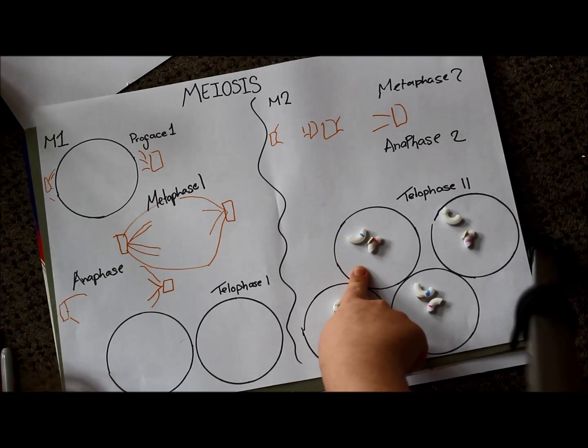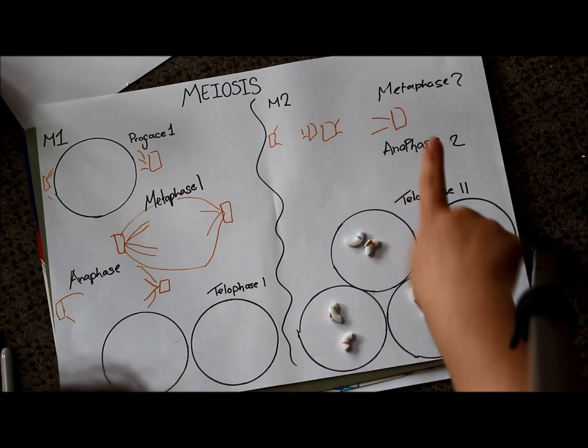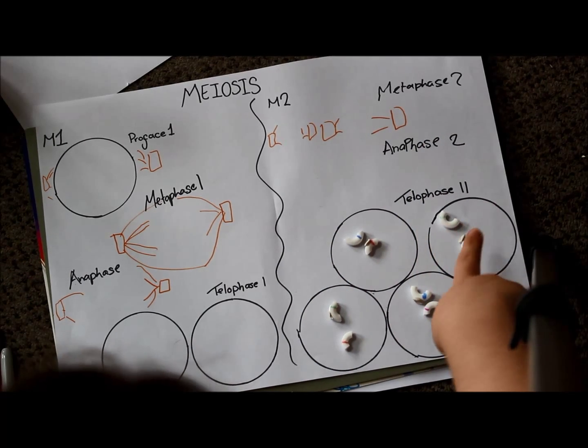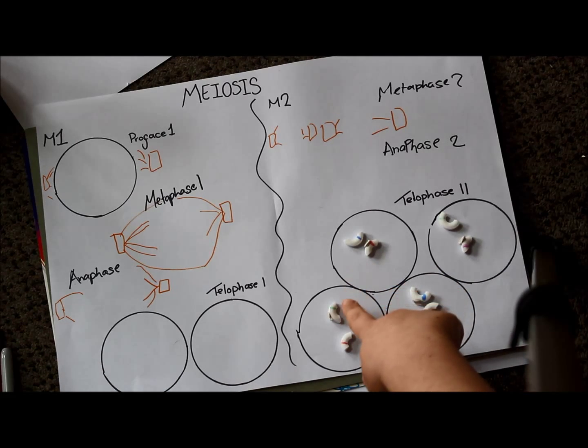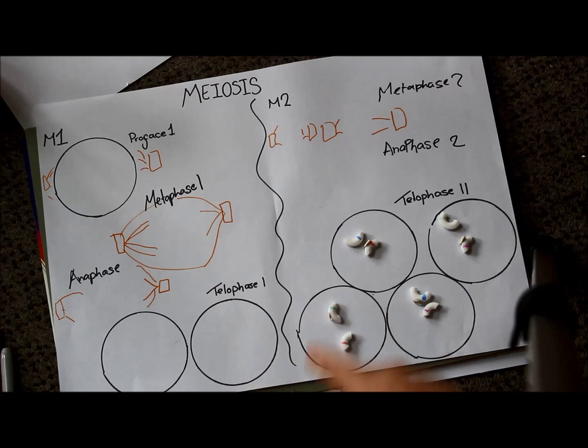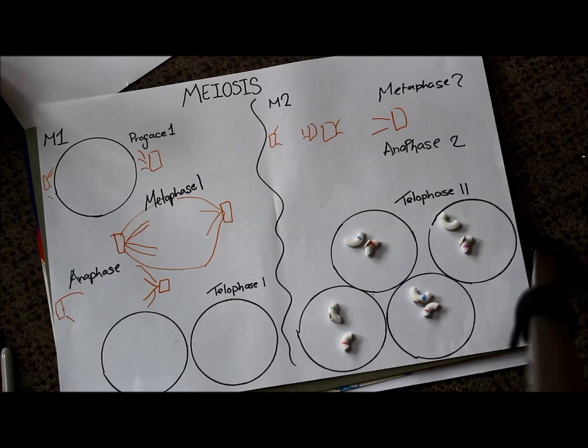So this cell has the allele for blue eyes and hitchhiker's thumb. This has the allele for green eyes but no hitchhiker's thumb. This has the allele for blue eyes with no hitchhiker's thumb. And this has the allele for green eyes with hitchhiker's thumb. That is the result of random segregation and crossing over. We want all the different gametes to have different genetic makeups, because then we end up with genetic variation among our children. And that's mitosis and meiosis in a nutshell really.